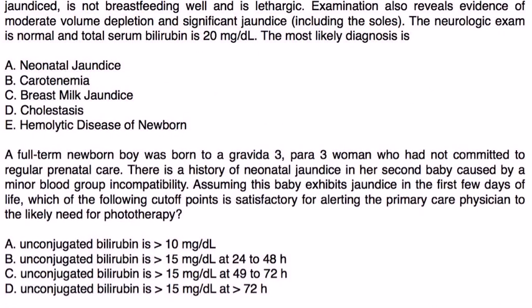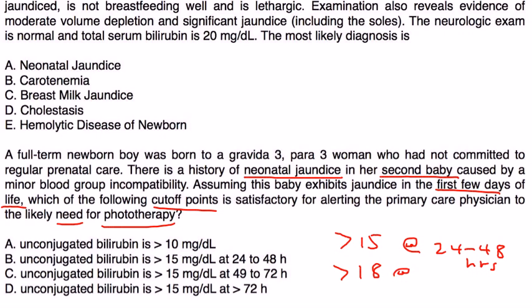A full-term newborn boy was born to a Gravida 3 Para 3 woman who had not committed to regular prenatal care. There is a history of neonatal jaundice in her second baby caused by a minor blood group incompatibility. Assuming this baby exhibits jaundice in the first few days of life, which of the following cutoff points is satisfactory for alerting the primary care physician to the likely need for phototherapy? Well, if you remember, the cutoffs were 15 for the bilirubin at 24 to 48 hours of life, greater than 18 at 49 to 72 hours of life, and greater than 20 after 72. It looks like choice B is the best one.